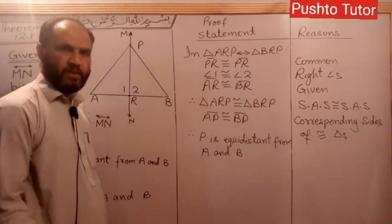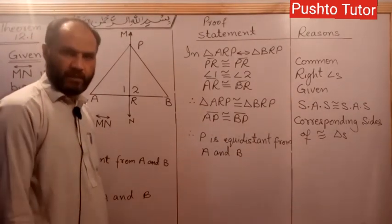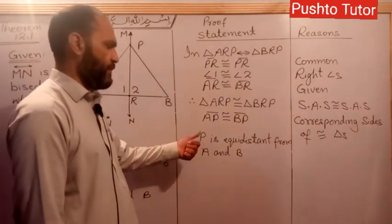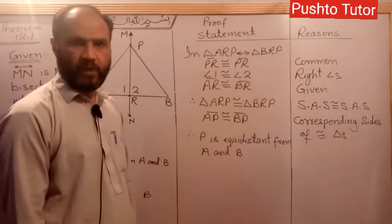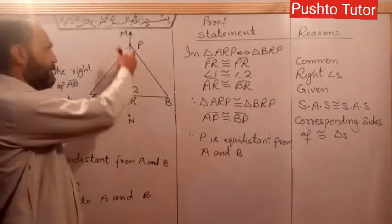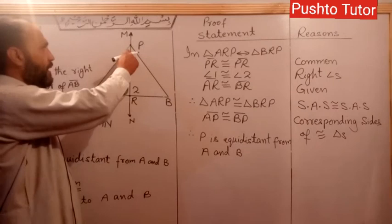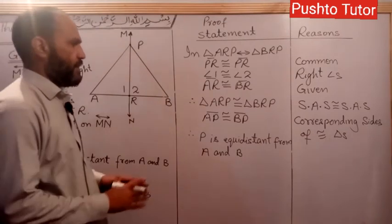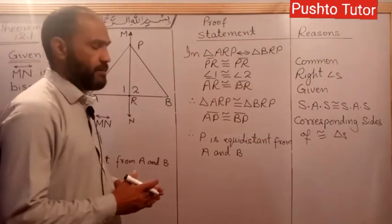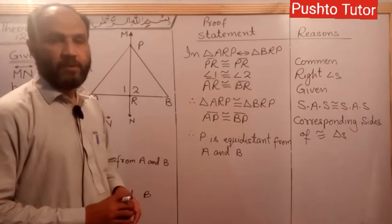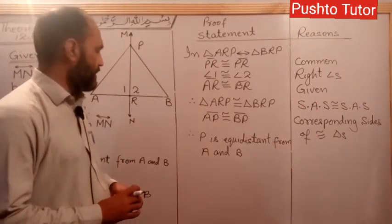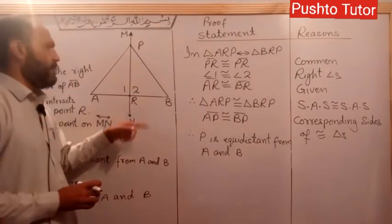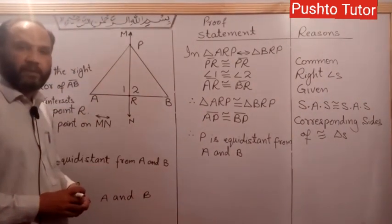AP and BP are equal, so P is equidistant from A and B. P is any point we selected - we can select any point on the right bisector. Whatever P point we choose, it will be equidistant from the endpoints of the line segment AB. A and B are equidistant.